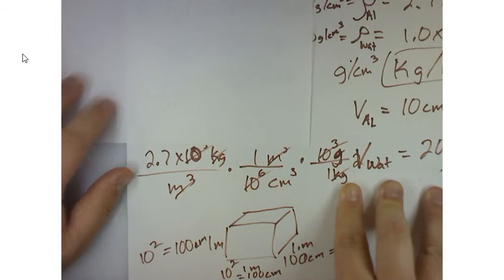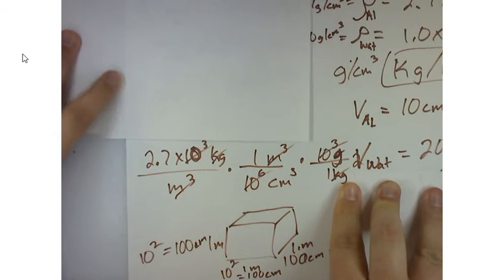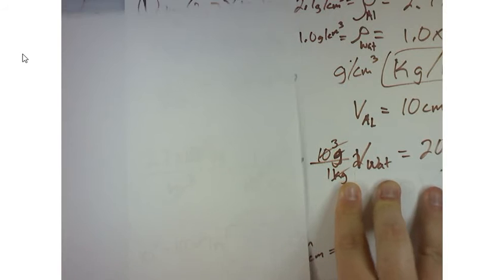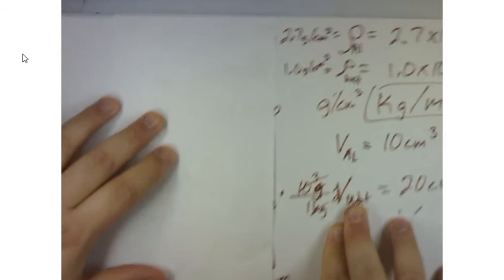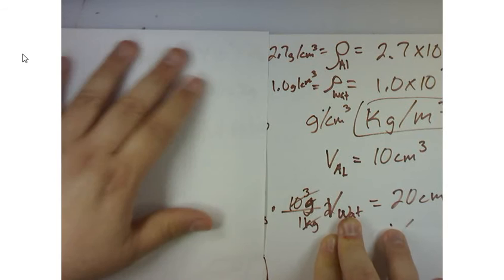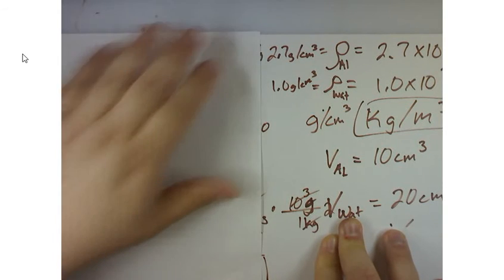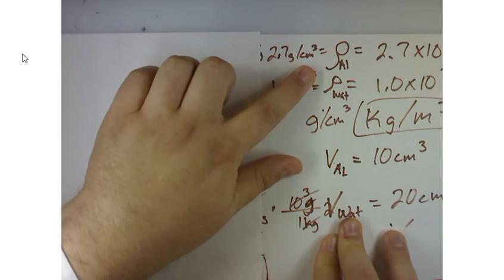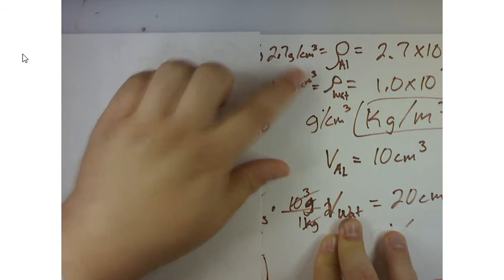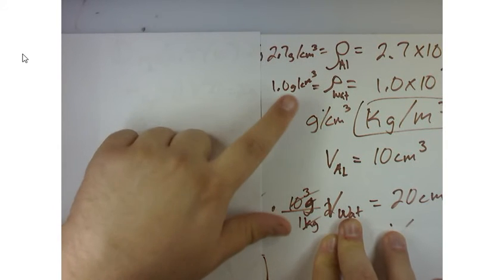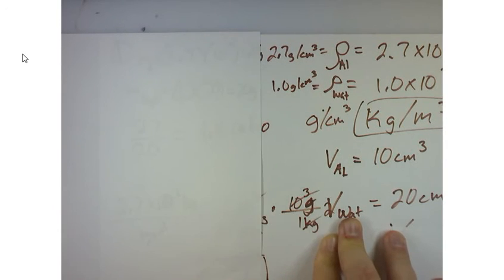When I'm done, I'm left with 2.7 grams per centimeter cubed. So the density of aluminum, if I convert the units to grams per centimeters cubed, I get 2.7 grams per centimeters cubed and 1.0 grams per centimeters cubed for water. Those are the densities.